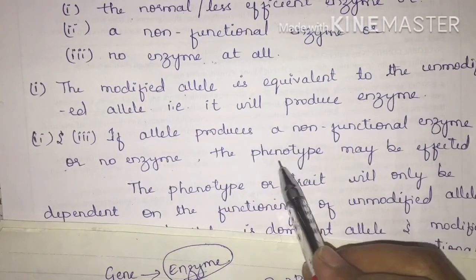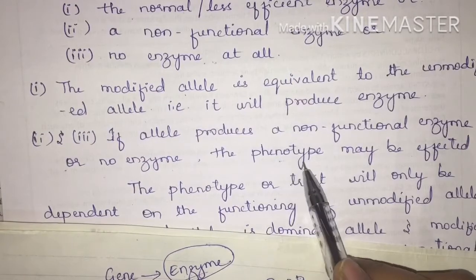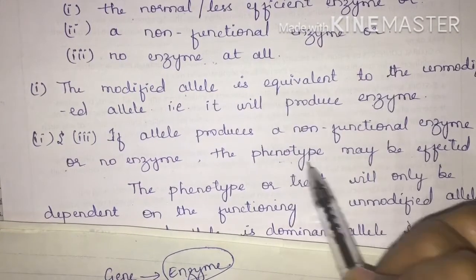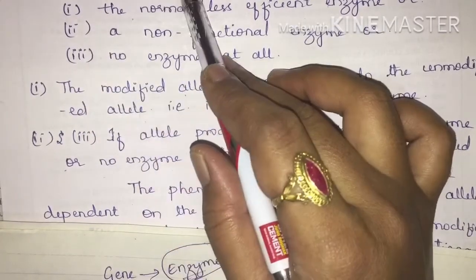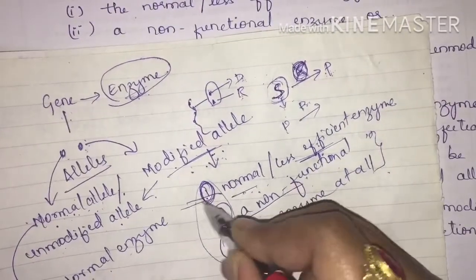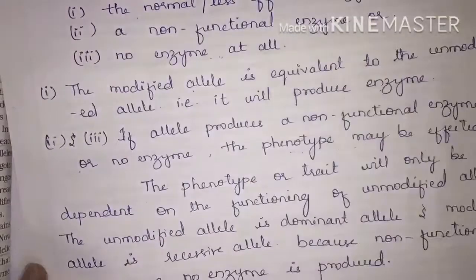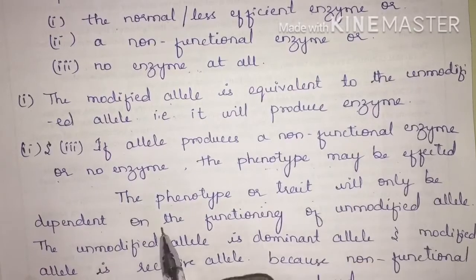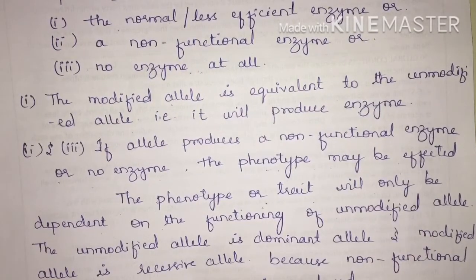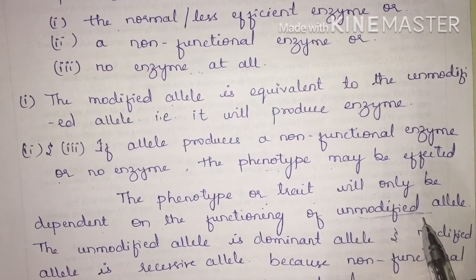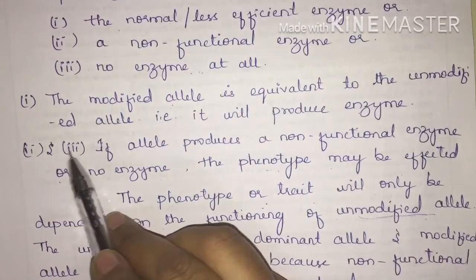In the second and third cases, a non-functional enzyme or no enzyme is produced by the modified allele, so the phenotype — the trait or character — will get affected. In these two cases, the phenotype or trait will only be dependent on the functioning of the unmodified allele. The character will depend entirely on the normal allele functioning.